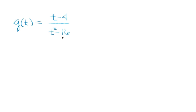To find the vertical asymptotes, we take the denominator and set it equal to 0, then solve for t.